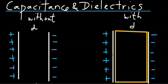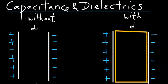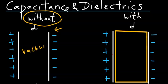To understand the effects of dielectrics on capacitance of a capacitor, let's look at these two diagrams. This diagram right here represents a parallel plate capacitor with nothing in between — namely, just vacuum.